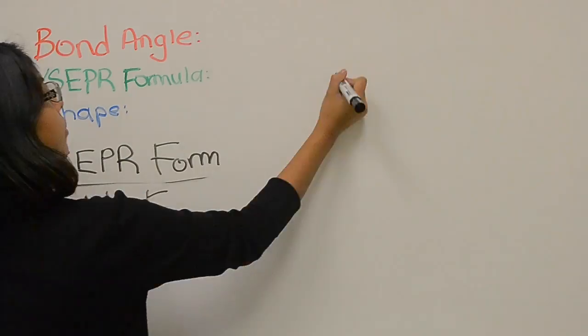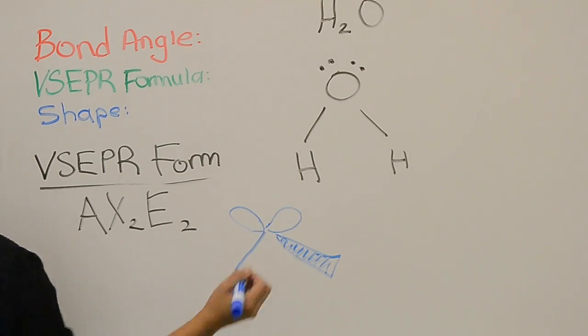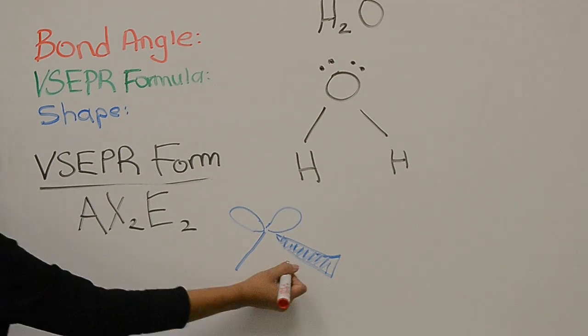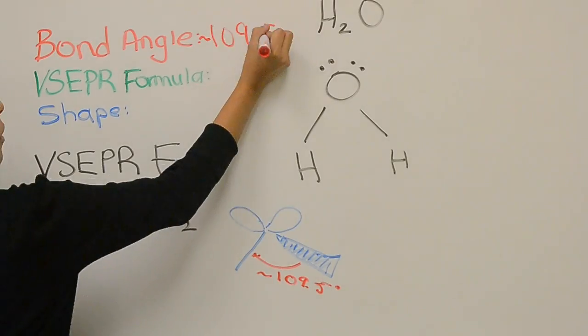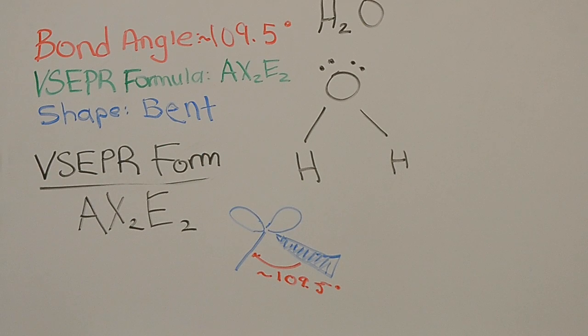Now we have the water molecule. We see that the bent shape is due to the electrons pushing on the hydrogen bonds a bit closer, making the molecule bent. Since both electrons repel each other, this bond angle is approximately 109.5 degrees. And the VSEPR form is AX2E2.